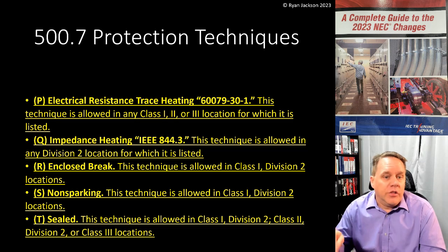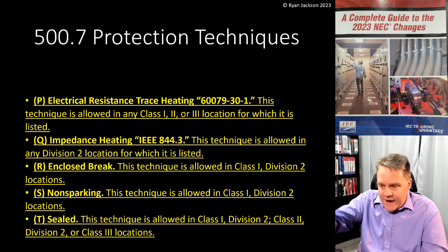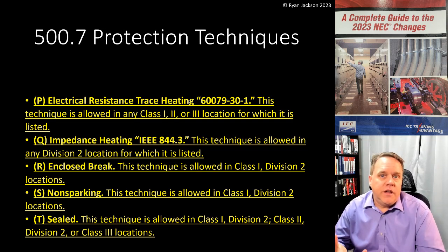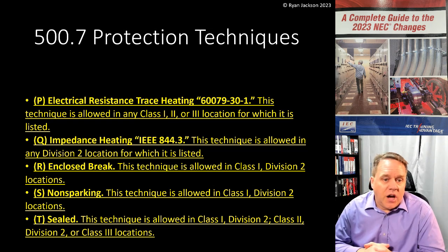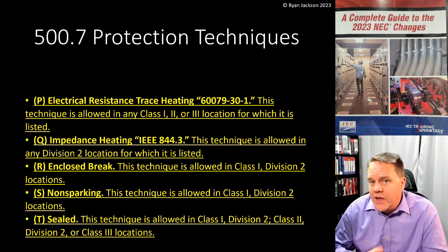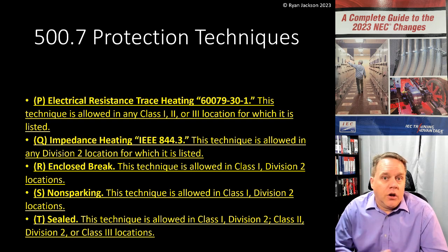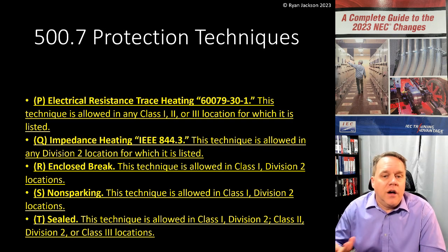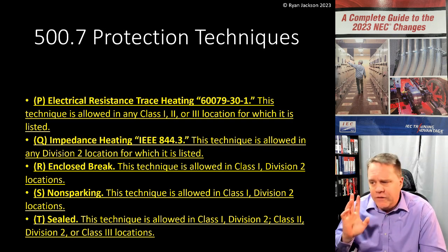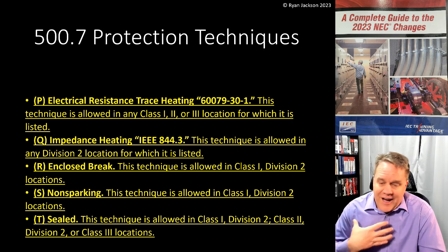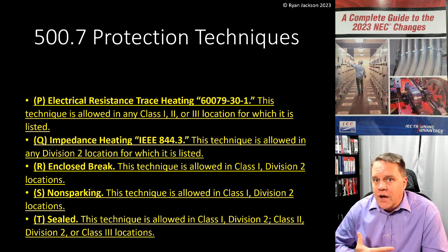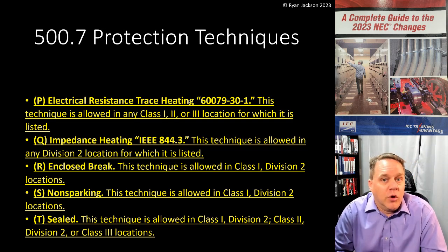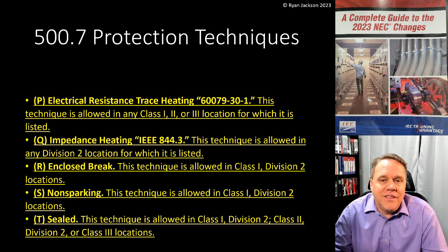We still have the 'other protection techniques' category — it will be item U after items Q through T. Flame-proof, for example, is not uncommon but we don't specifically discuss it in the NEC, so that would fall under 'other.' So if you're into classified locations, there you go. I'm more excited about the table in Chapter 9 than items P through T, since most of that is for zone classifications. See you on the next video.